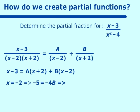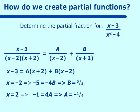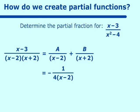From negative 5 equals negative 4b, we get b equal to 5 fourths. Then substituting x equal to 2, the b part cancels out and we get negative 1 equal to 4a, so a equals negative 1 fourth. So x minus 3 over x squared minus 4 is re-expressed as negative 1 over 4 times (x minus 2), plus 5 over 4 times (x plus 2).